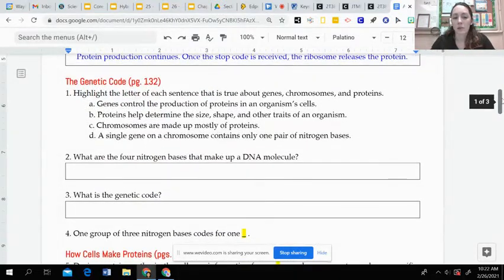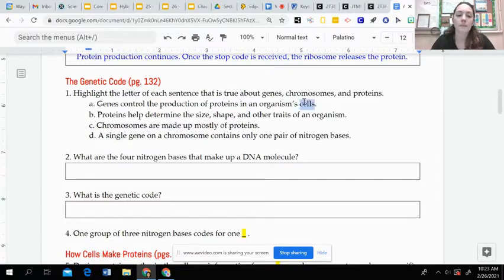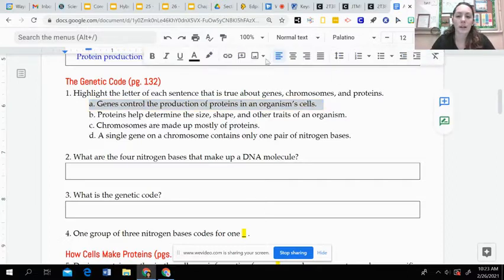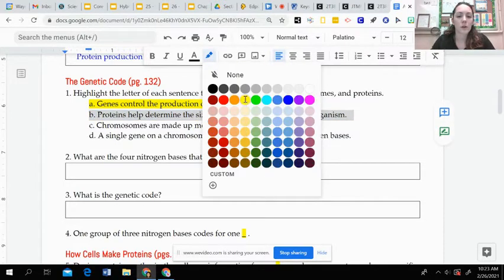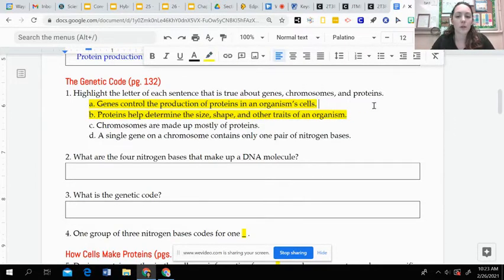Once you get into the genetic code, then you are highlighting the letter of each sentence that is true about genes, chromosomes, and proteins. So you should have highlighted A and B. Genes control the production of proteins in an organism's cells, and proteins help determine the size, shape, and other traits of that organism.